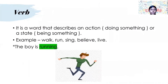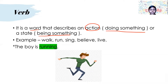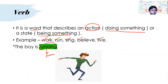A verb. What is a verb? It is a word that describes an action — doing something or a state of being something. Examples: walk, run, sing, leave, believe, live, etc. Example: 'The boy is running.' Here running is the verb — it tells what action the boy is doing. It is the continuous form.